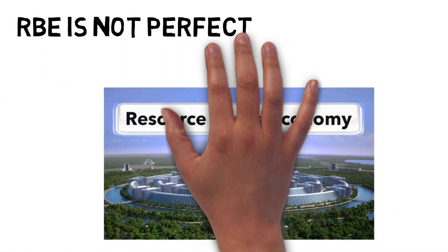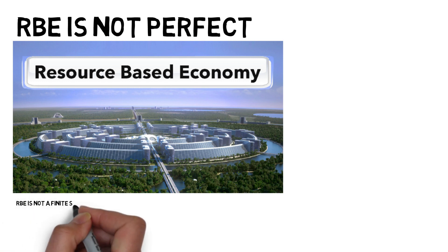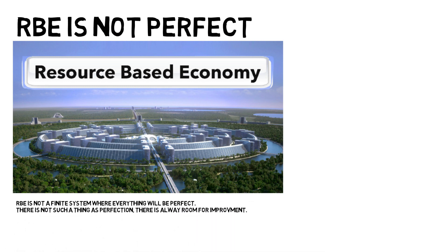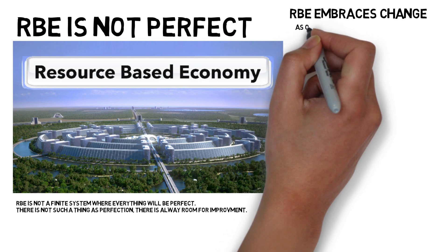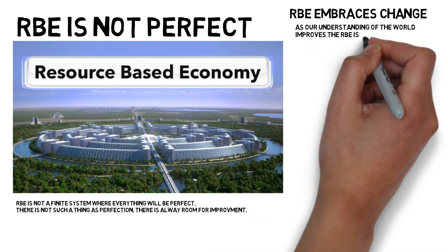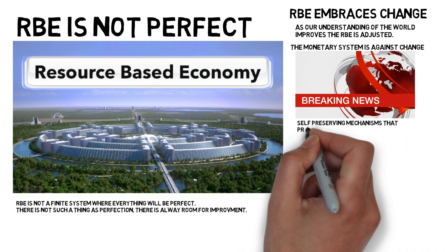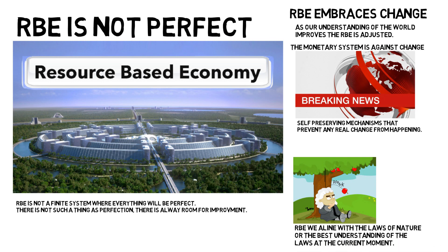Some argue that an RBE is an imaginary place where everything is perfect — a utopia that will not work in real life. An RBE is not a finite system where everything is perfect; there is no such thing as perfection. There is always room for improvement, but it can seem like a utopia because an RBE is much better than the current monetary system we have today. It is important to understand that an RBE embraces change — as our understanding of the world changes or improves, the RBE is adjusted. The monetary system, by contrast, has self-preserving mechanisms that prevent change. In an RBE, we align with the laws of nature, or the best understanding of the laws of nature at any given moment. It is not a question of choice — nature is a dictatorship. Either we align or we perish.